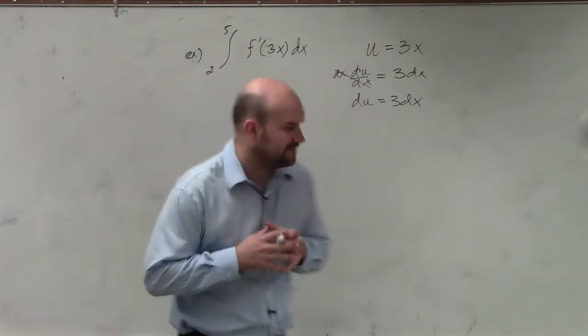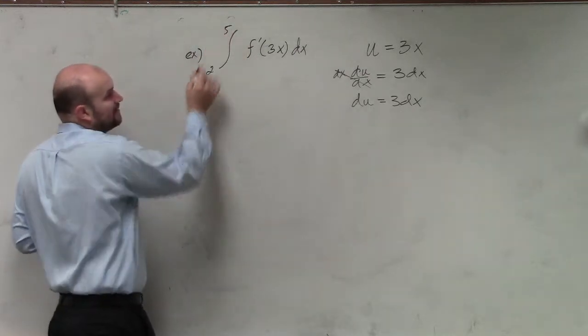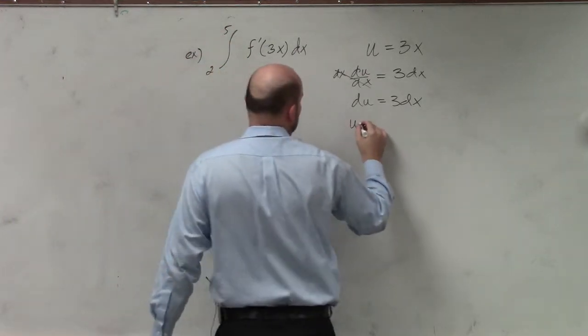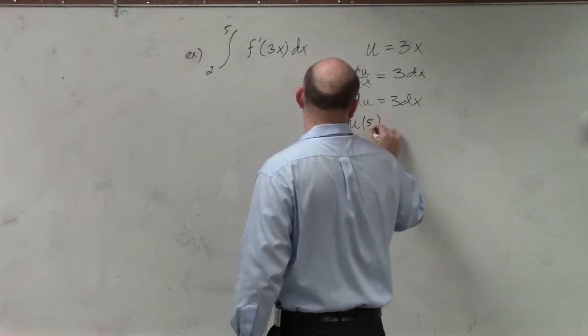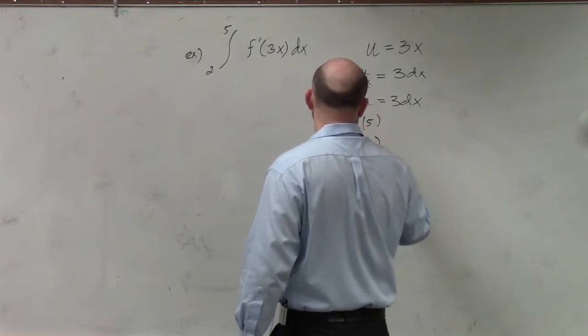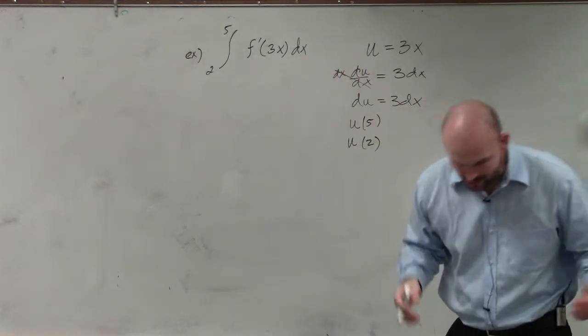So the next thing is, now that we're using our definite integral, we need to figure out our u(5) and our u(2), which is basically our lower and our upper bound.